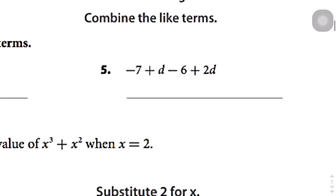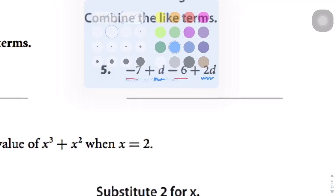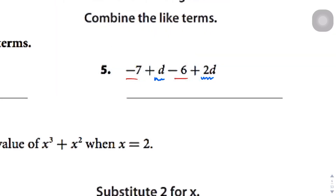Question number 5. I'm going to do the same thing — squiggles for the variable terms and red lines for the constants. Adding the d's first: we have positive d plus 2d. I have 1d and then 2 more, so combined I have 3d. Then I have negative 7 and I'm going to subtract 6 more from that, so negative 7 minus 6 gives negative 13. If you're having trouble adding and subtracting integers, ask your math teacher because this is a very important skill.